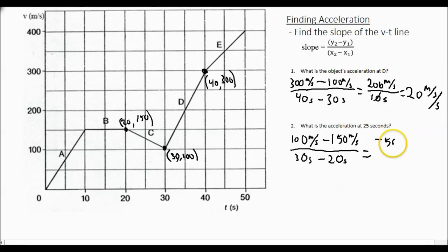In this case, we get a negative 50 meters per second divided by 10 seconds. And our final answer is negative 5 meters per second per second.